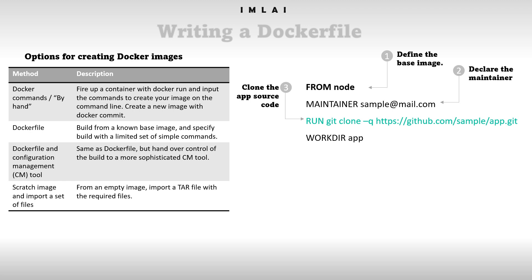Then we have WORKDIR app. Once you have cloned the directory, you move into it with the WORKDIR command. Not only does this change the directory within the build context, but the last WORKDIR command determines which directory you are in by default when you start a container from your built image. So WORKDIR app means that whenever you log into your container, your default working directory will be 'app' — similar to how you log into a Linux server's home directory by default.